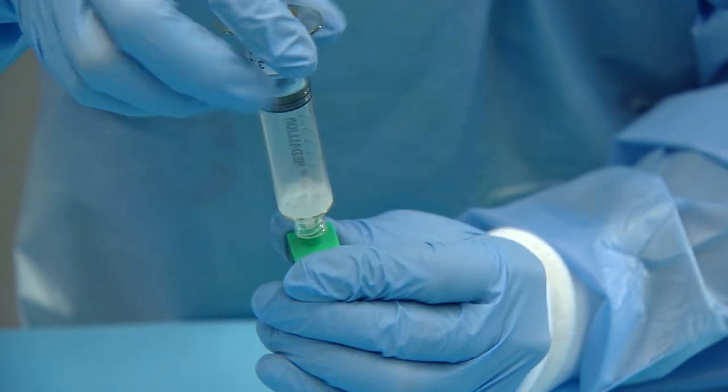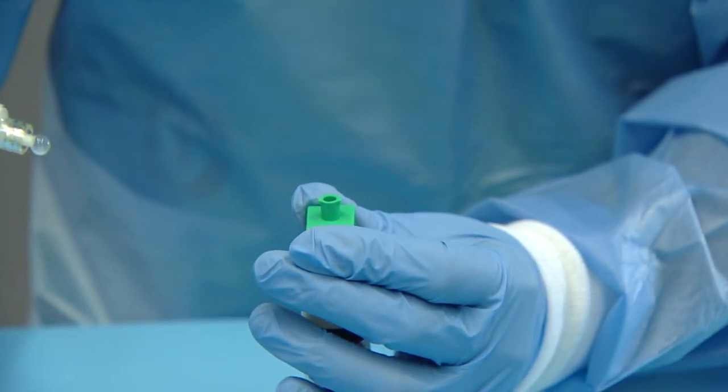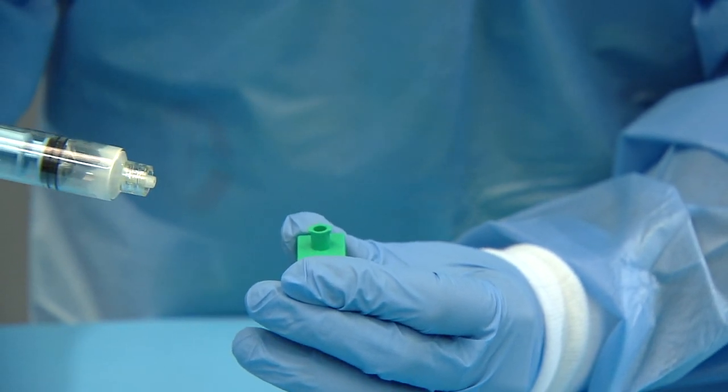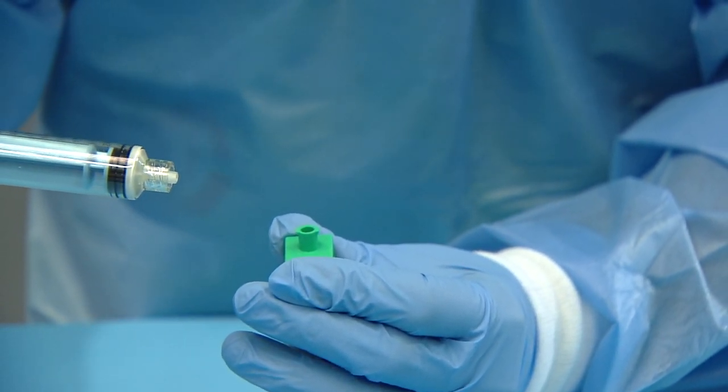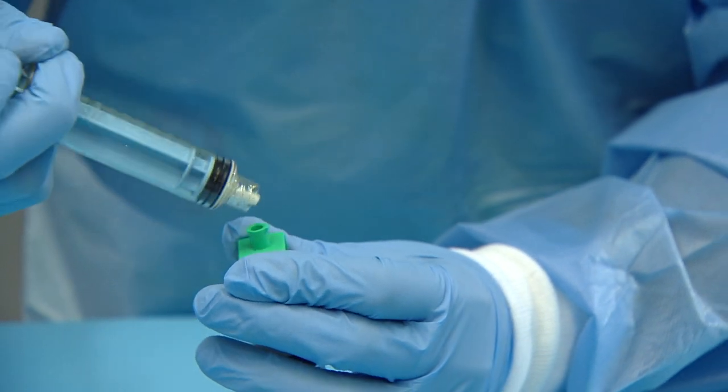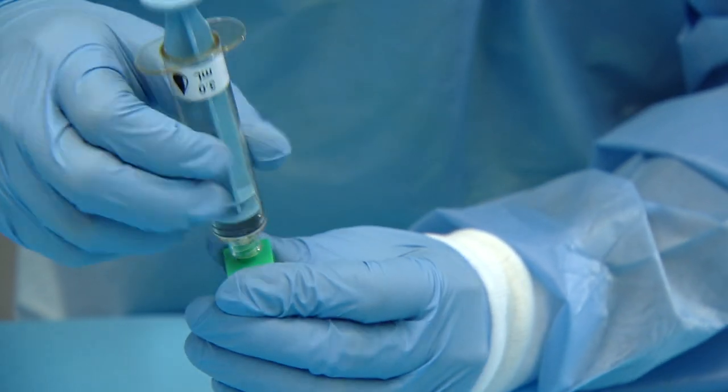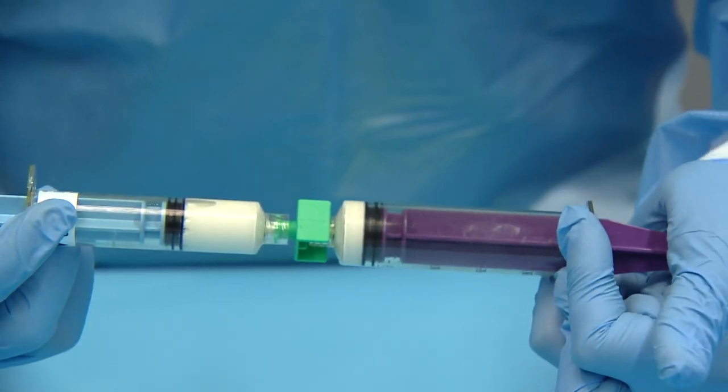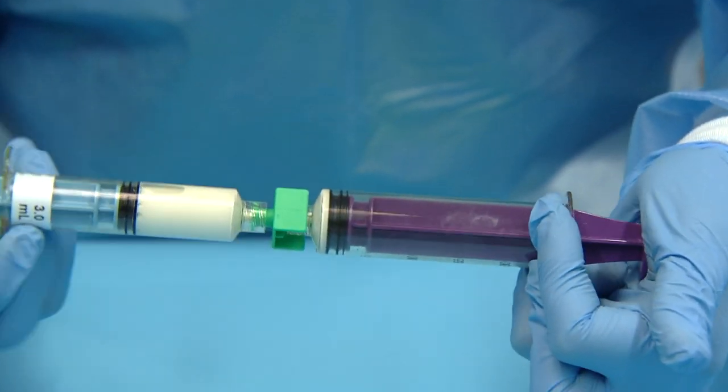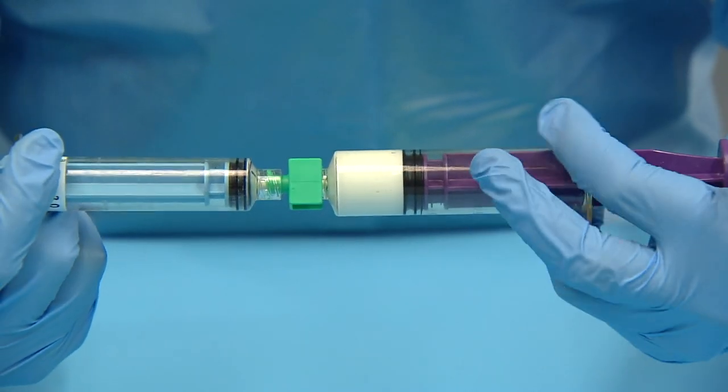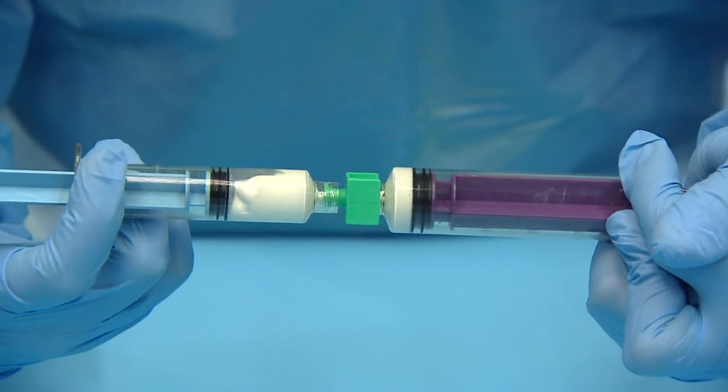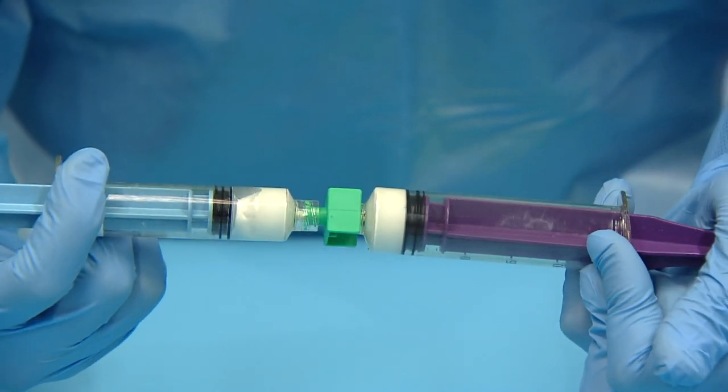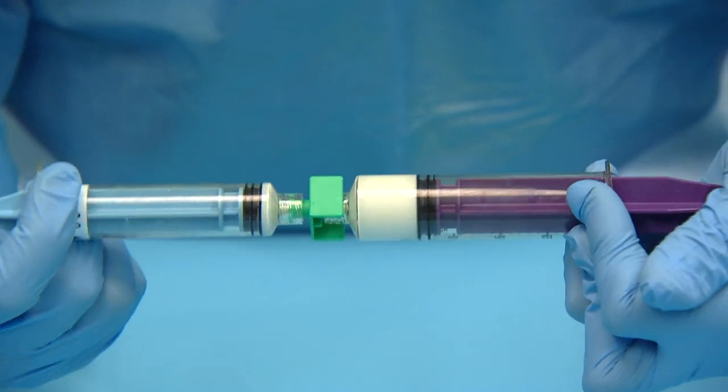Disconnect the syringes. Expel the air from the syringe and connect them back together. Initiate syringe to syringe mixing by transferring all contents from one syringe to the other. Repeat approximately five to ten times until all material transfers smoothly.